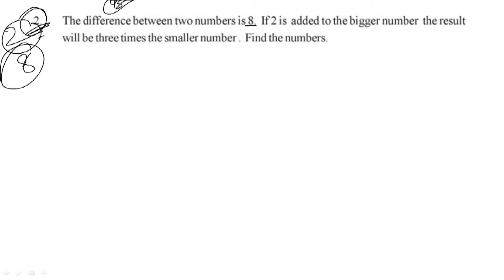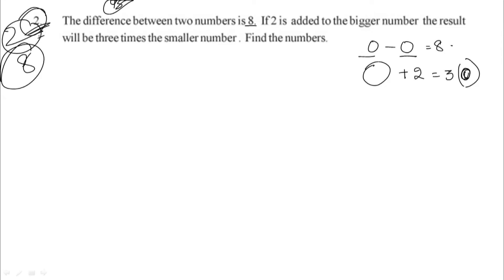Find the numbers. The difference between the 2 numbers is 8, and if 2 is added to the bigger number, the result will be equal to 3 times the smaller number. Let the bigger number be x.